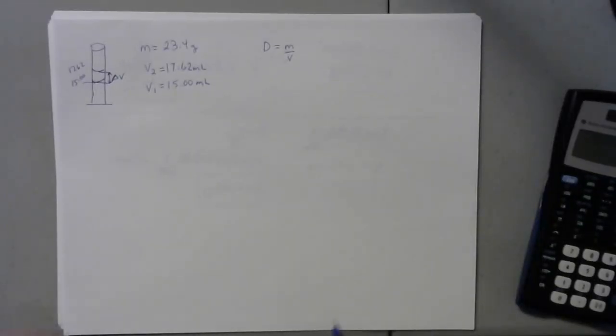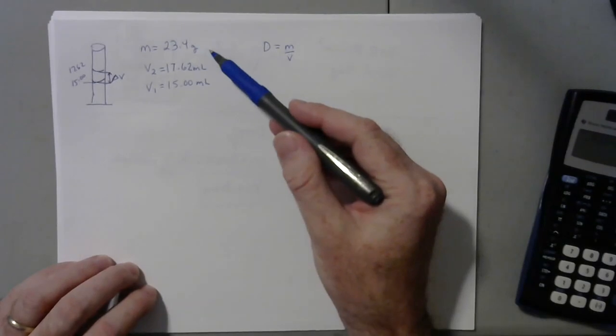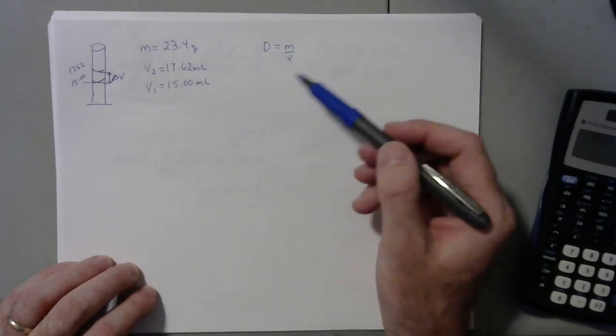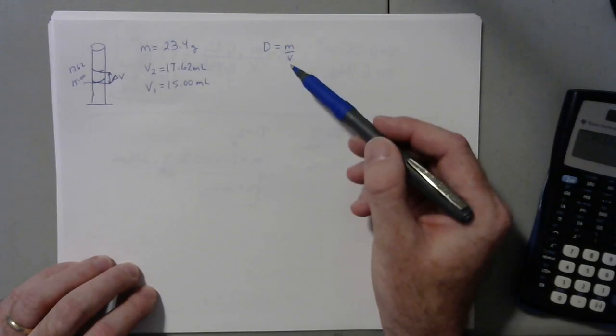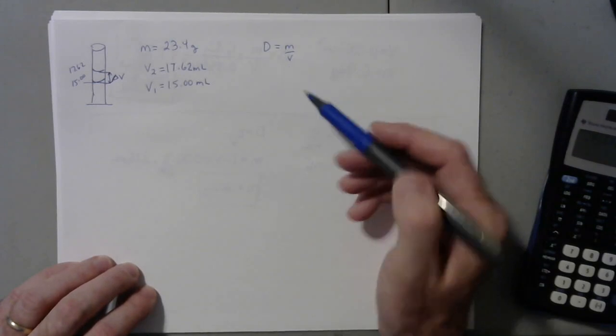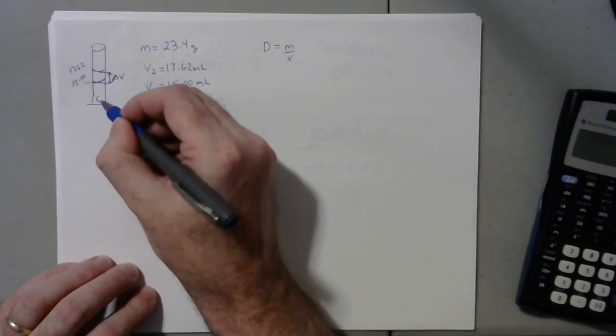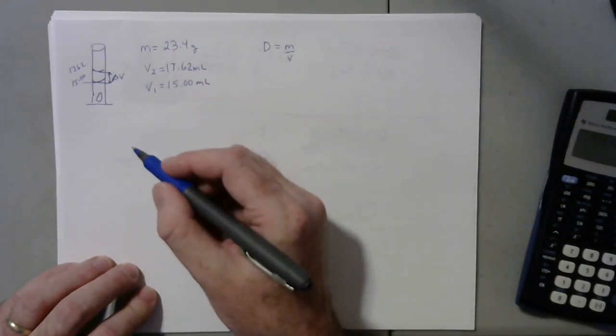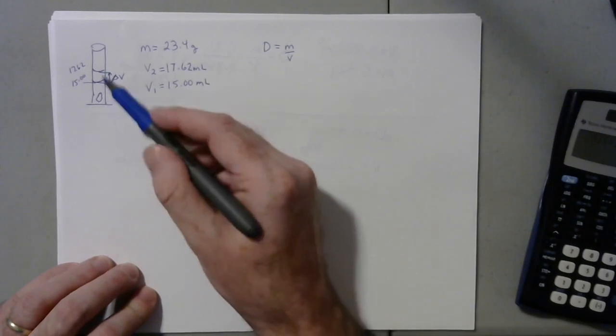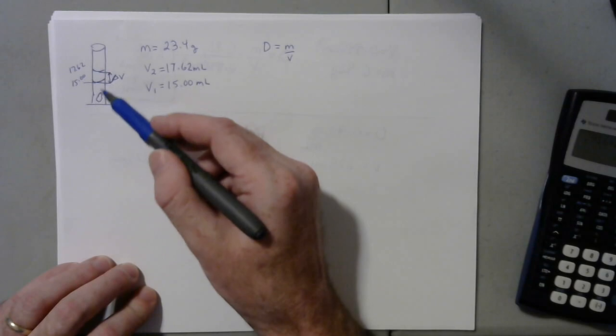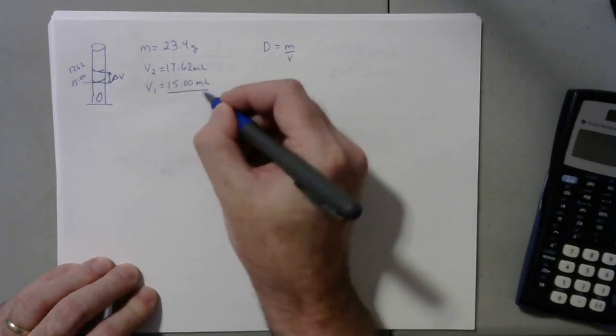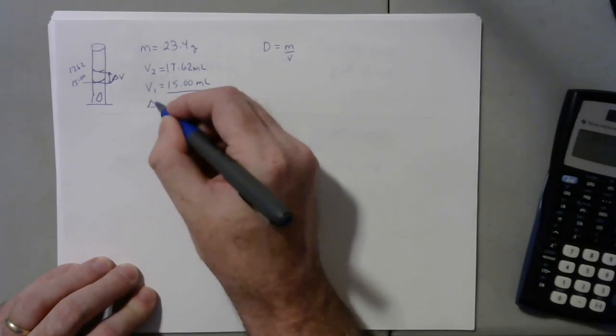Now pulling our information from the sheet we've got 23.4 grams is our mass and we got two volumes instead of one. In this case, if we submerge an object in a graduated cylinder that doesn't dissolve in water and just sinks to the bottom, it will displace an amount of water equal to its volume.